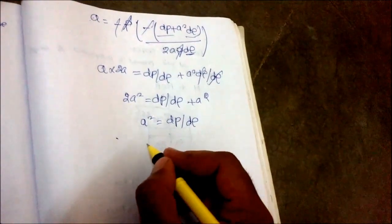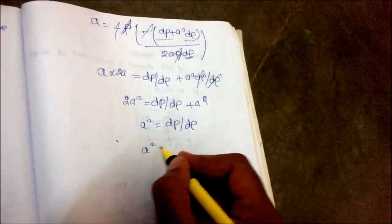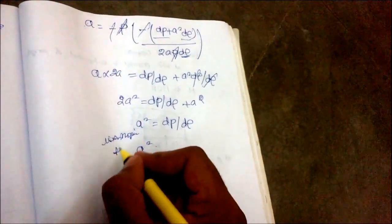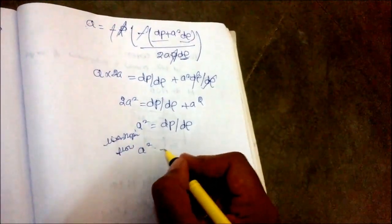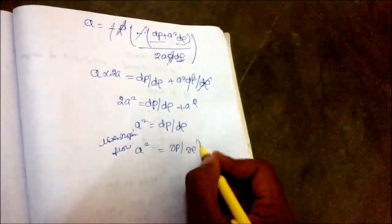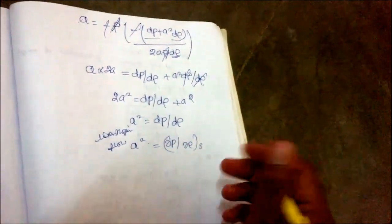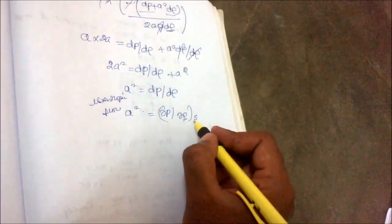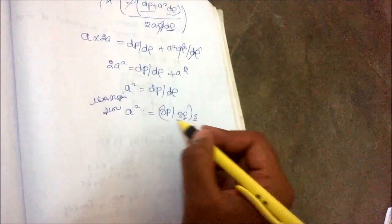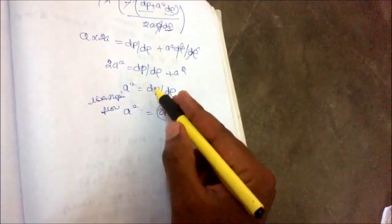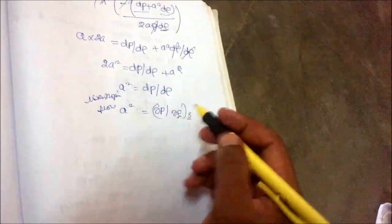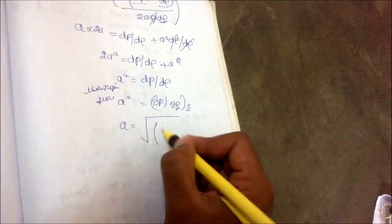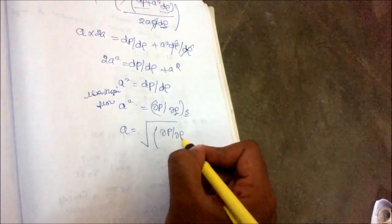For constant entropy — that is, isentropic flow — this can be written as the partial derivative ∂P/∂ρ at constant entropy S, because both density and entropy are involved. We change from ordinary to partial differential. Therefore: A = √(∂P/∂ρ)_S.